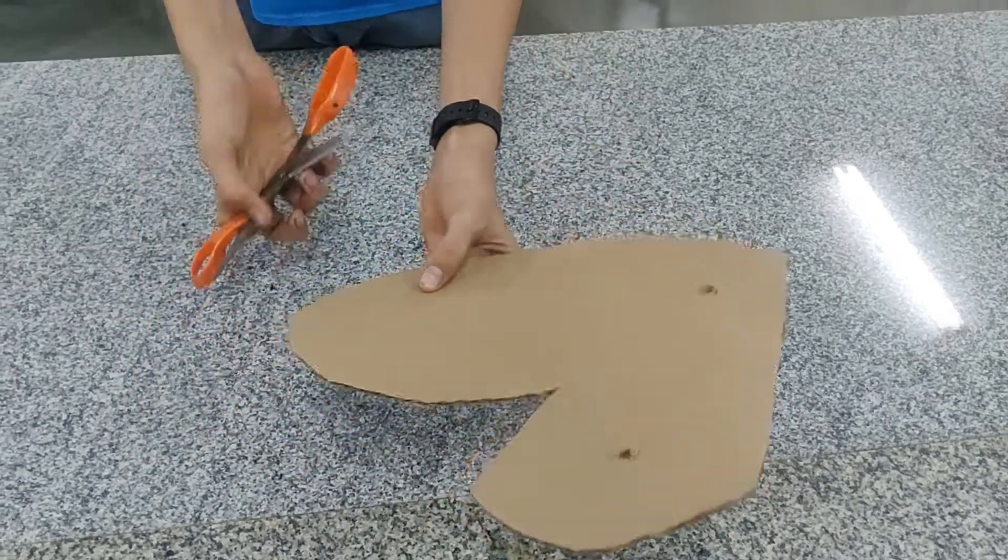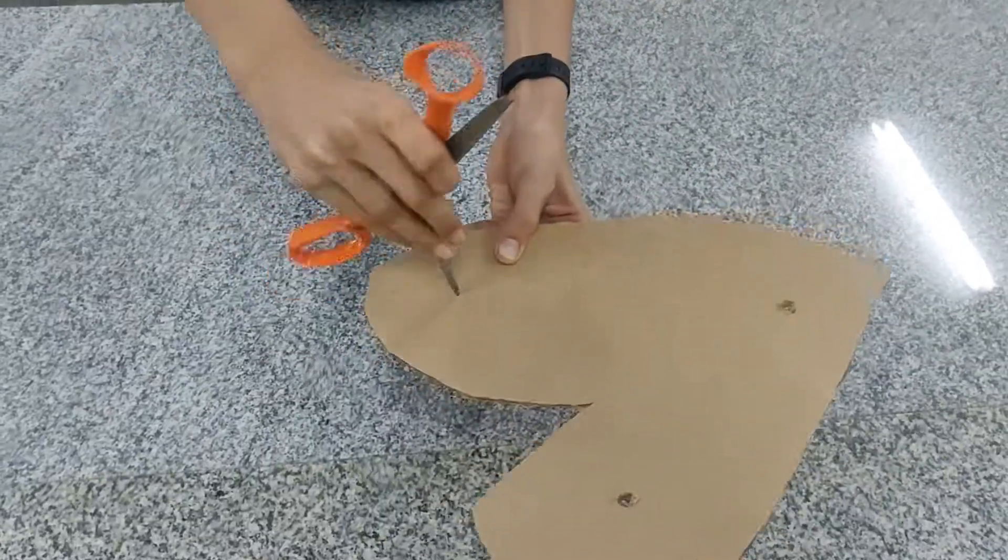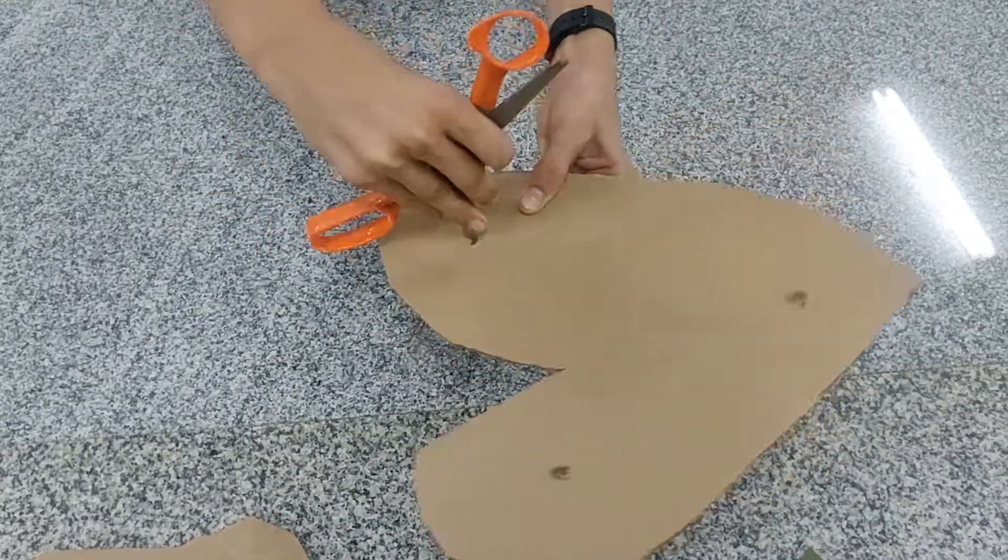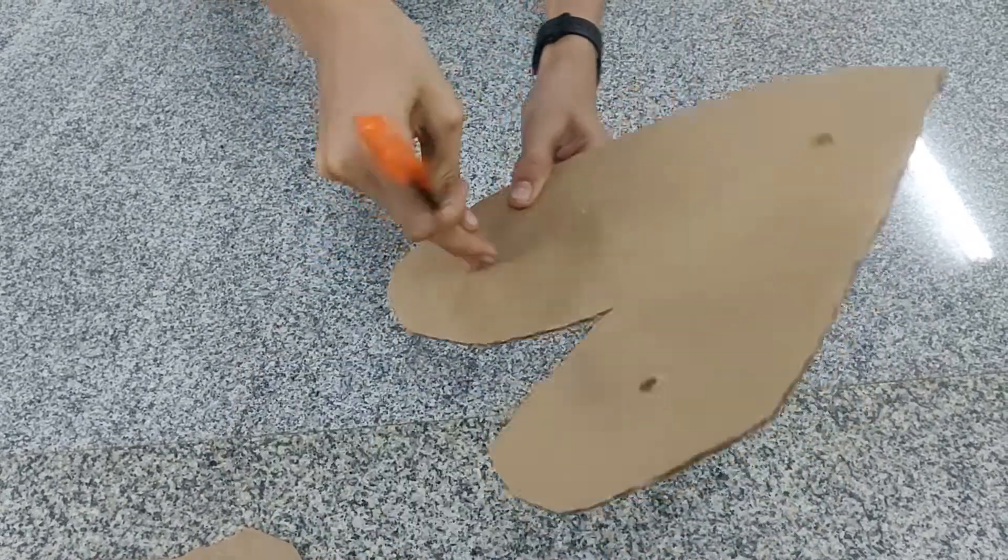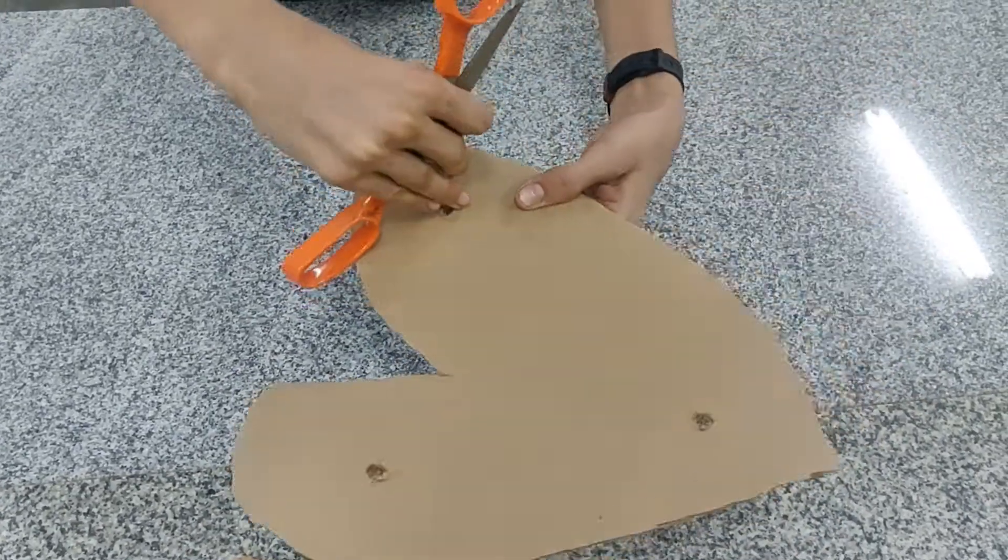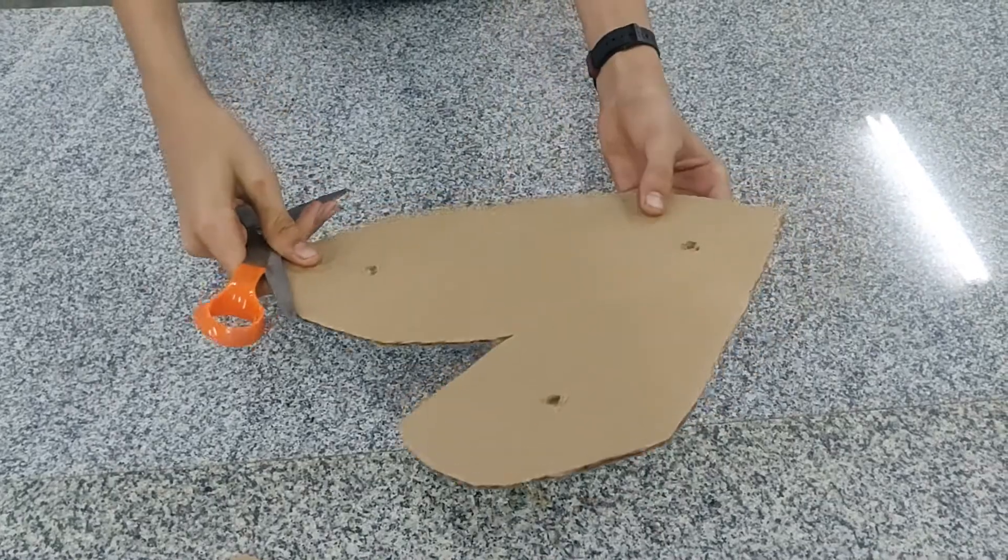But we make these holes such that we know that the center of mass is within these three holes. Okay. So let's make the third hole. All right. So we have made these three holes.